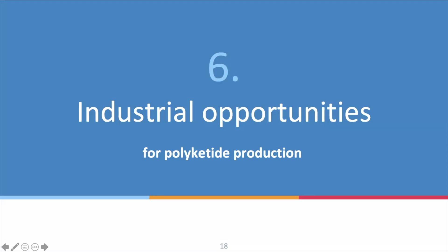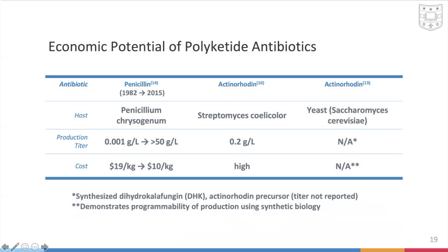Comparing industrial opportunities: penicillin, the most famous antibiotic first discovered, saw production increase from 0.001 g/L to 50 g/L between 1942 and 2015, with cost reduced from $19,000 per kilogram to $10 per kilogram. Xynohodin, produced by Streptomyces, has a maximum production titer of around 0.2 g/L and remains very expensive. The new technology producing polyketides from eukaryotic cells like yeast can currently produce polyketide precursors but not the final antibiotic xynohodin, indicating that significant further study and development is needed.